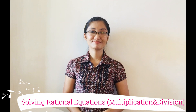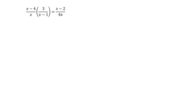Let's have these examples. The first given is: (x minus 4) all over x, times 3 over (x minus 1), equals (x minus 2) all over 4x. The same rules in multiplying simple fractions apply to multiplication of rational expressions. Note that the left side is only one term, since the operation between (x minus 4) over x and 3 over (x minus 1) is multiplication.